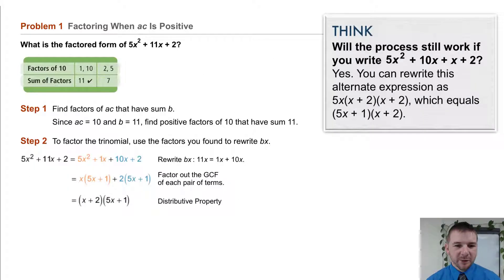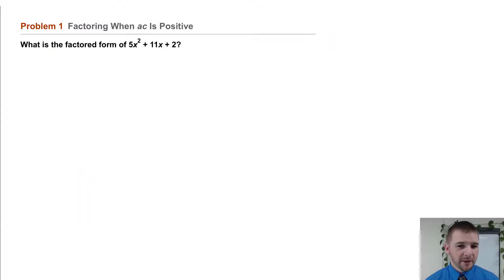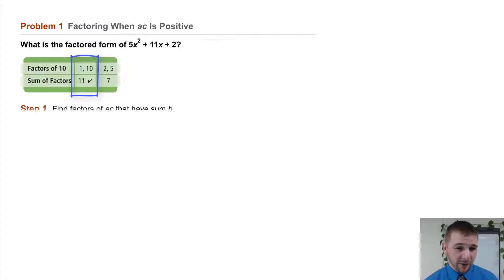Problem 1. Factoring when a times c is positive. What is the factored form of 5x² + 11x + 2? We'll make a table. The factors of 10 are 1 and 10, and 2 and 5, and the sum of those factors of 10, 11 and 7. Note the checkmark next to 11. That's the one we're looking for. Step 1. Find factors of ac that have a sum of b. Since ac equals 10 and b equals 11, we need to find positive factors of 10 that have sum 11.